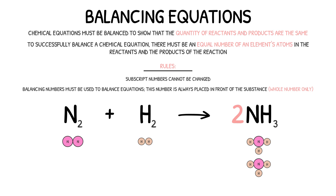The nitrogen atoms in this reaction are now balanced. However, we now have six hydrogen atoms in the products and only two in the reactants. If we place the number three before the hydrogen in the reactants, we now have three molecules of hydrogen gas and therefore six atoms of hydrogen. This equation is now balanced.